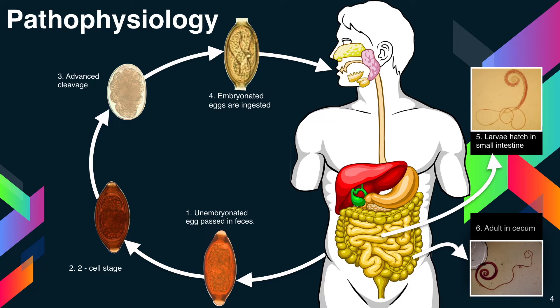The time from ingestion of eggs to development of mature worms takes approximately 3 months. Worms may live from 1 to 5 years, and adult female worms lay eggs for about 5 years, shedding up to 20,000 eggs per day.